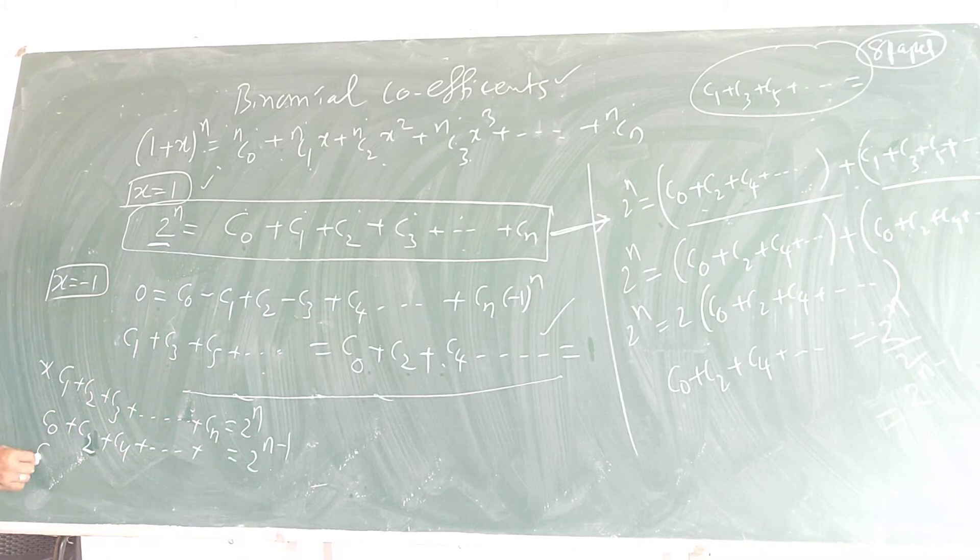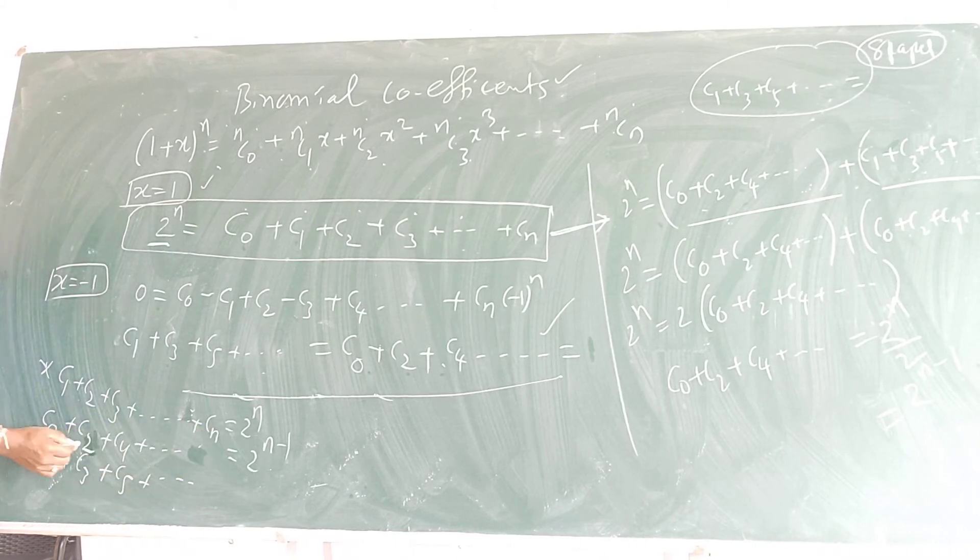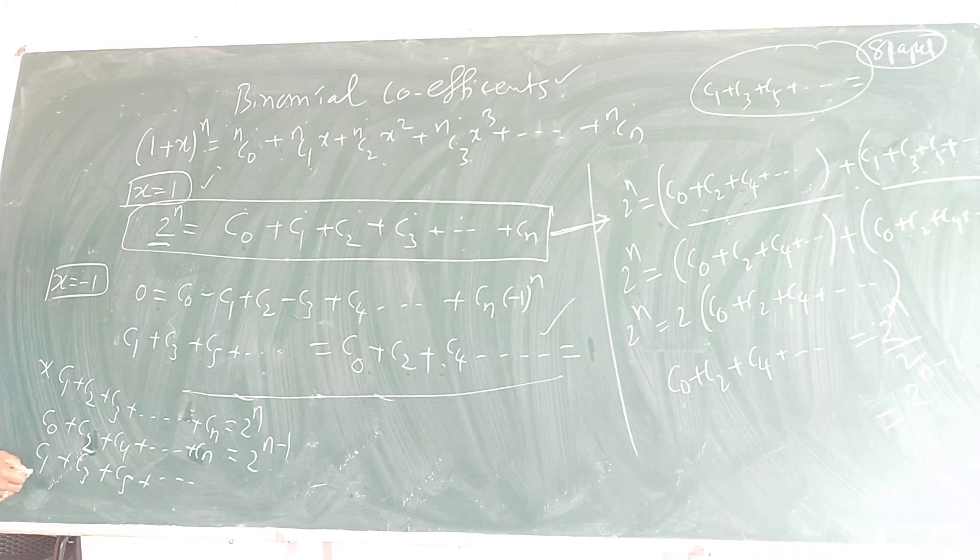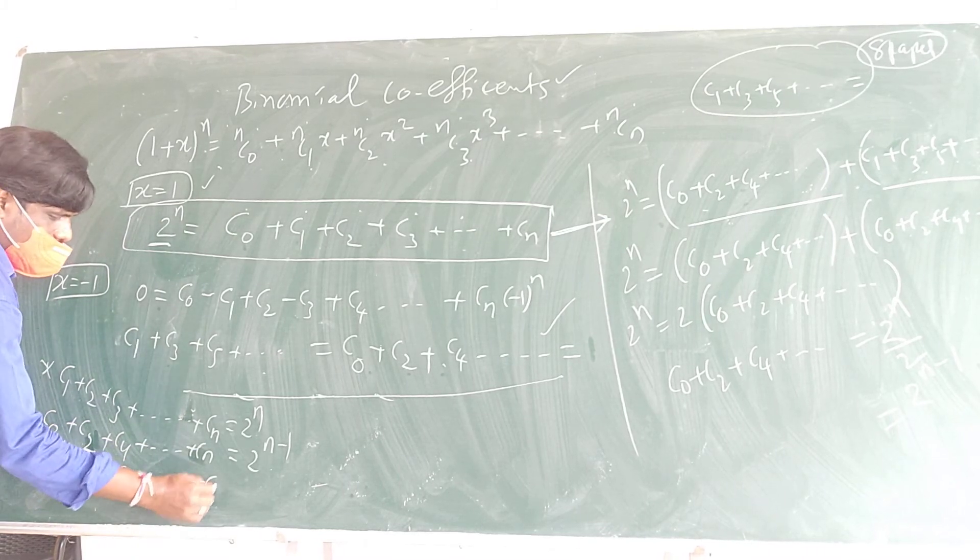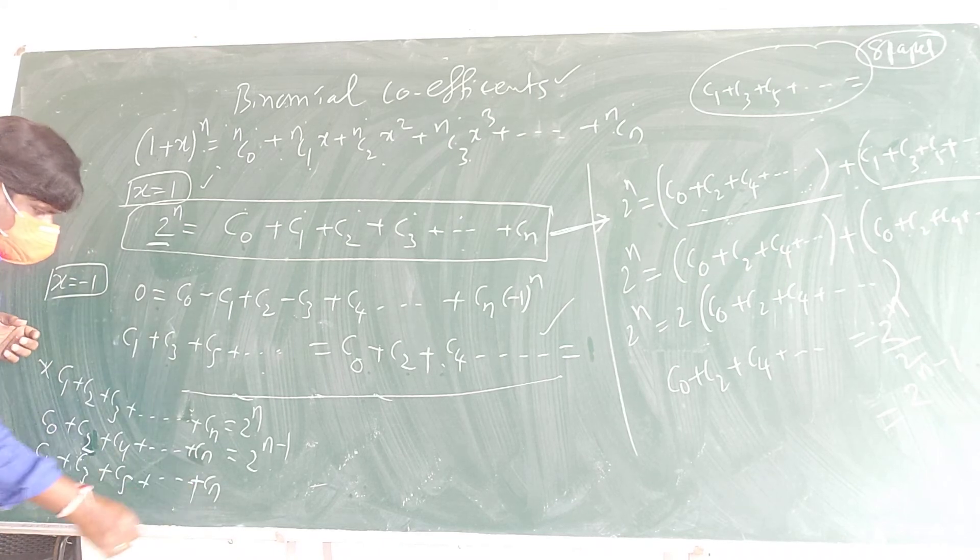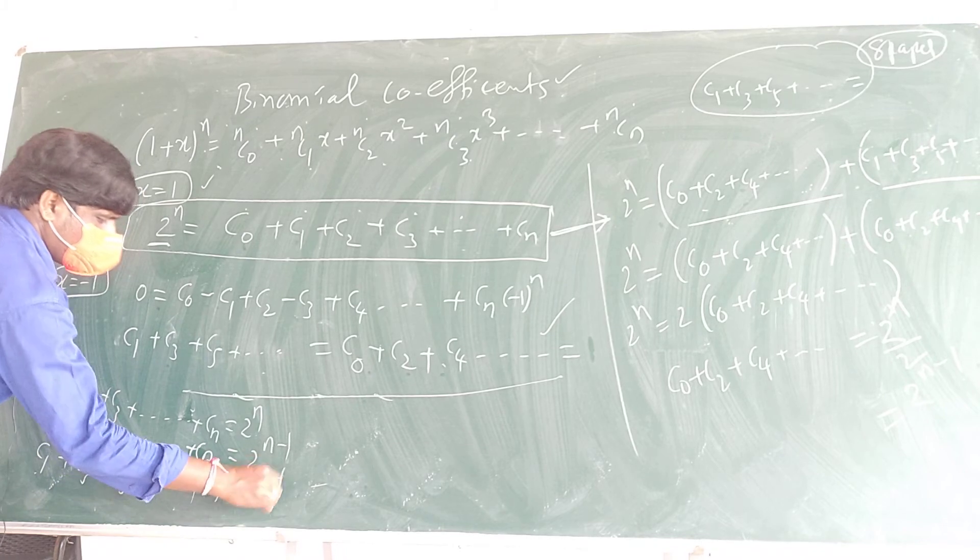And when you have C1 + C3 + C5 + ... and so on, you know here when you have even, that time you will get plus; when you have odd, you will get minus—no, okay, plus only. This answer will give you 2^(n-1).